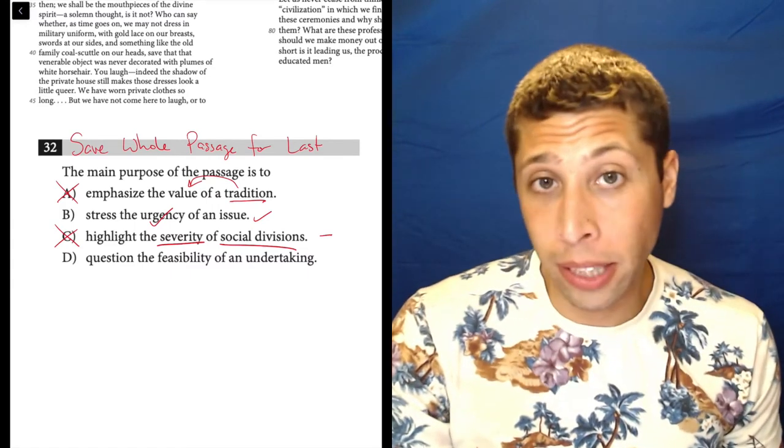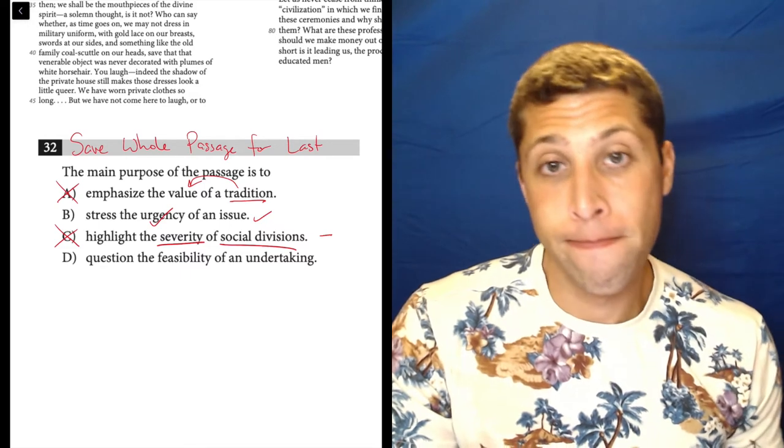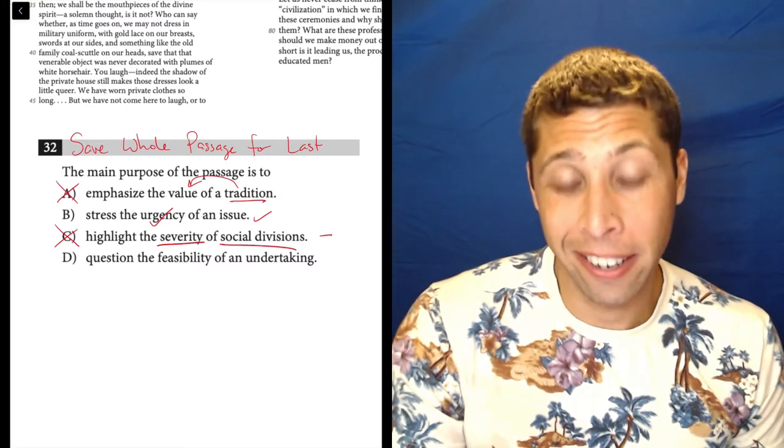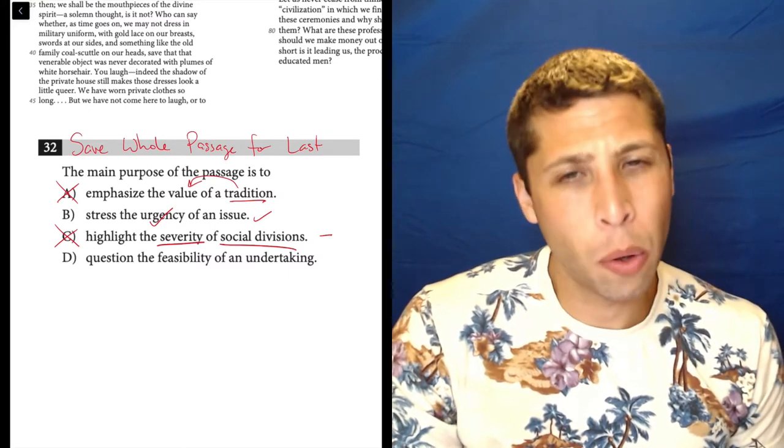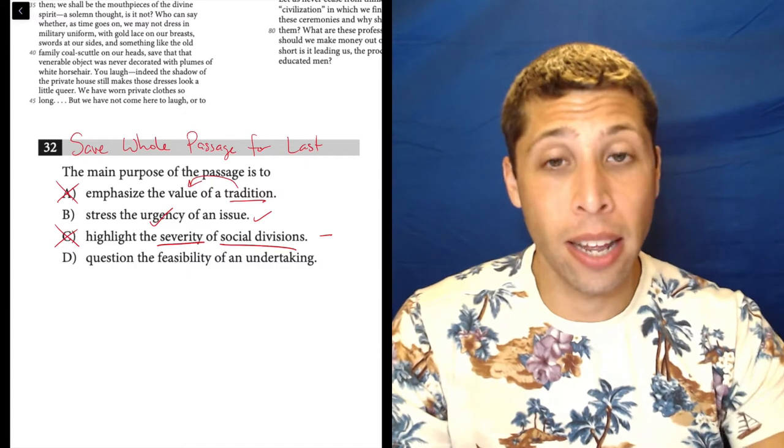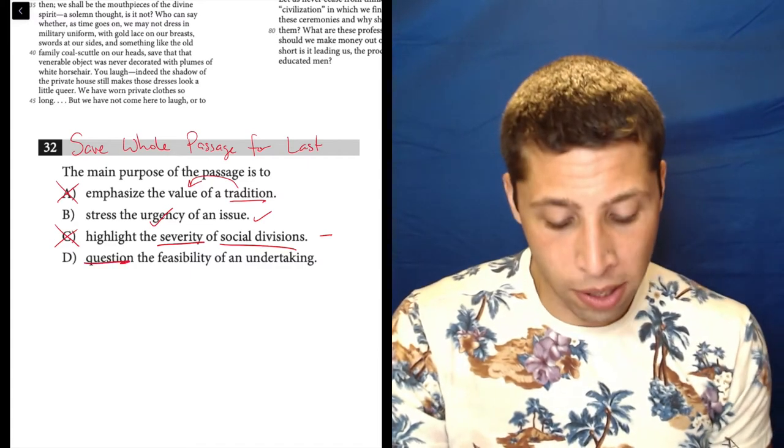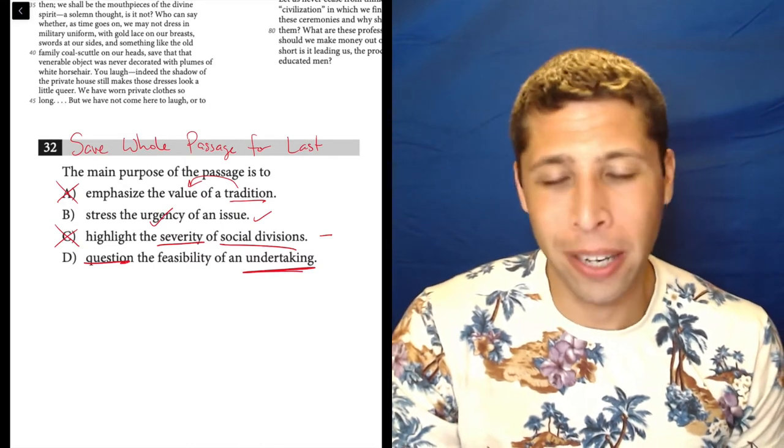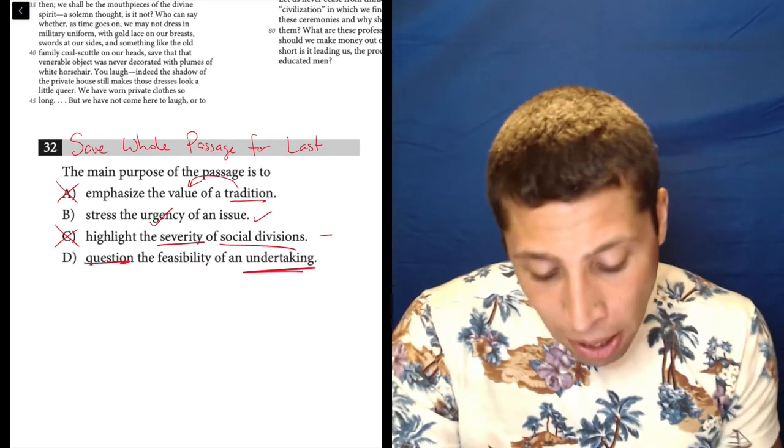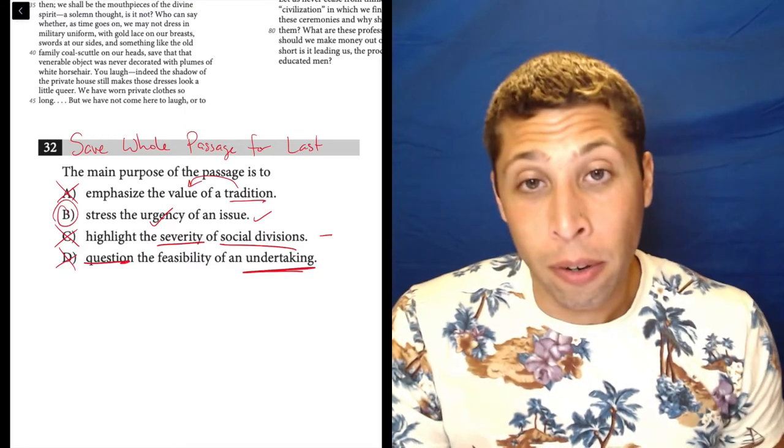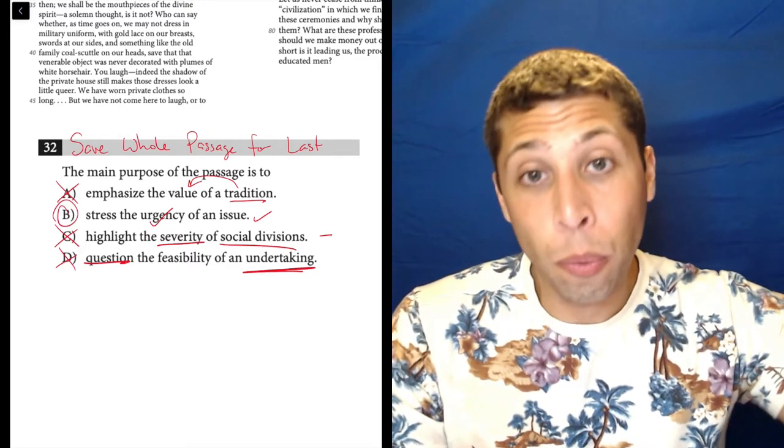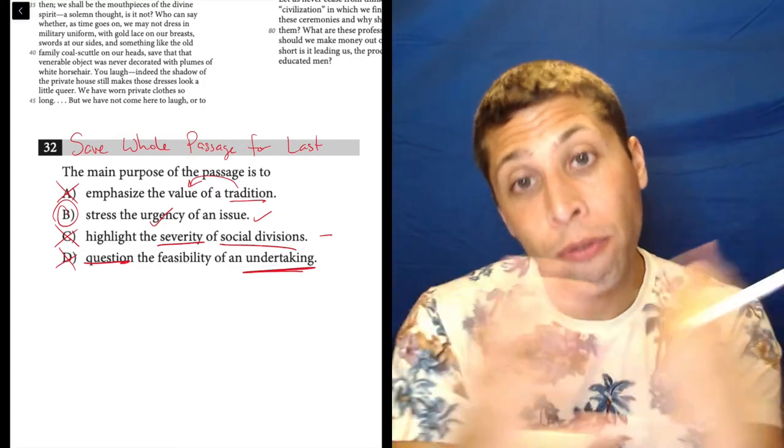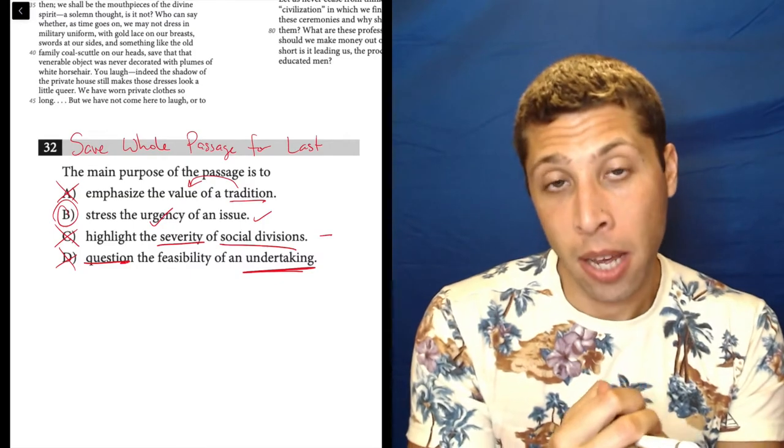This is maybe a negative tone when the passage has a much more positive tone about what's happening to those social divisions. So even if you're kind of like checking off that idea, it doesn't seem to match in terms of tone. And again, we can keep it dumb. Positives and negatives is a perfectly good way to do a dumb summary of what's going on. D, question the feasibility of an undertaking. Well, what is the undertaking? That women should have more rights? Maybe you could make that fit.